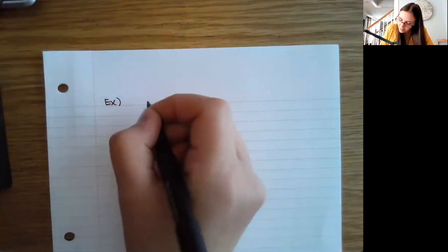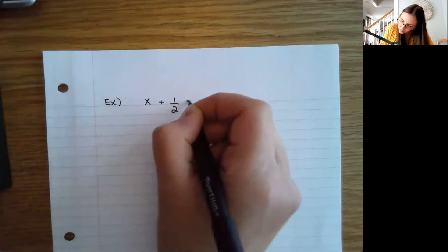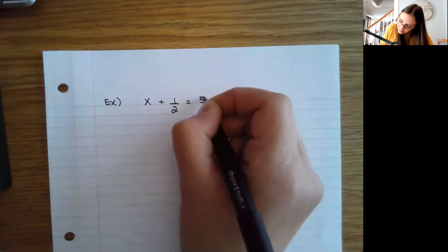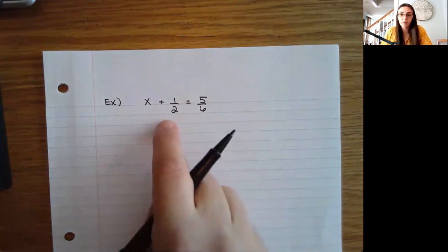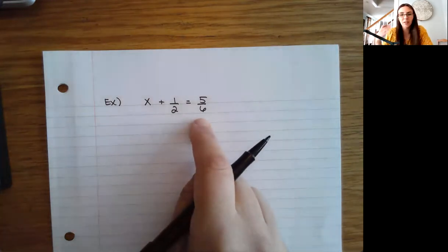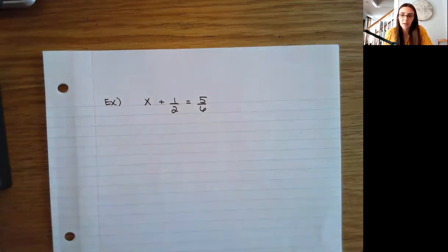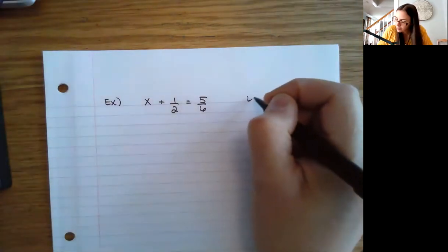Let's do a whole bunch of examples because it helps to see a few of them done out. Say I have x + 1/2 = 5/6. Now if you're happy to work with the fractions, you could always subtract one half from both sides using our regular solving rules, but then you're dealing with common denominators later on. So I like to do the common denominators up front.